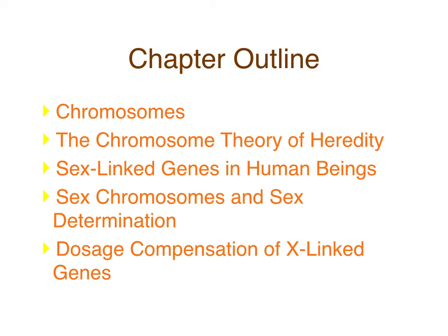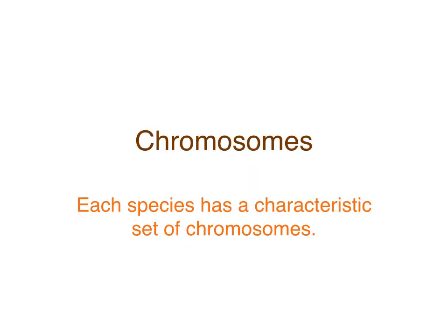Each species has a characteristic set of chromosomes. The term for all of our genetic material and chromosomes is a karyotype. Humans have a specific normal karyotype — 23 different kinds of chromosomes. We have one number-one chromosome from our father and one from our mother, so we have 46 total.